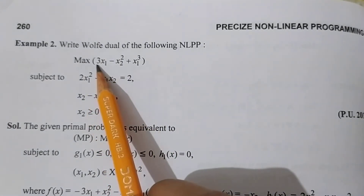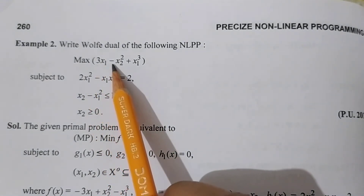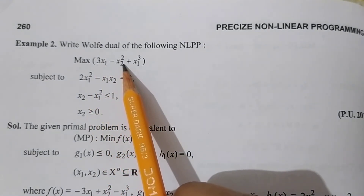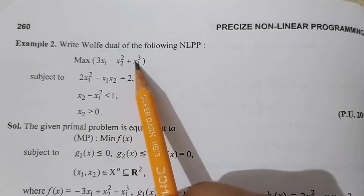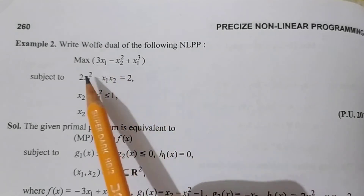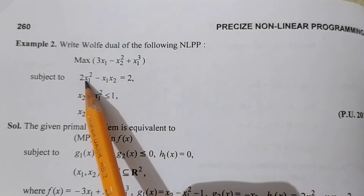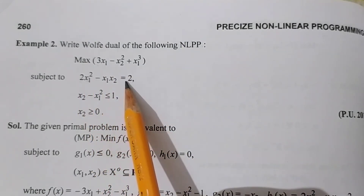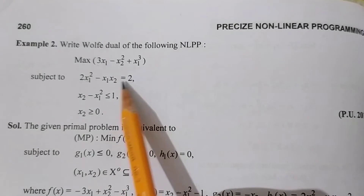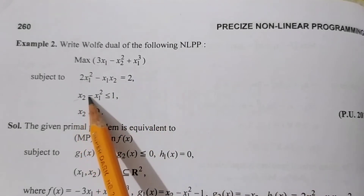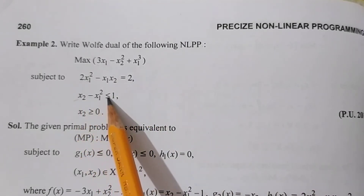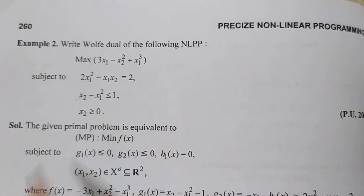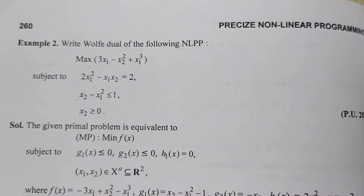Maximize 3x1 minus x2 square plus x1 cube, subject to: 2x1 square minus x1·x2 equal to 2; x2 minus x1 square less than or equal to 1; x2 greater than or equal to 0.